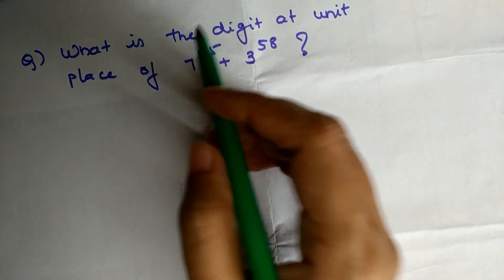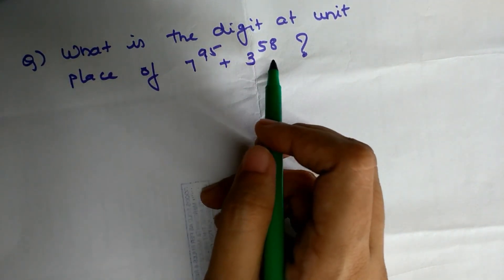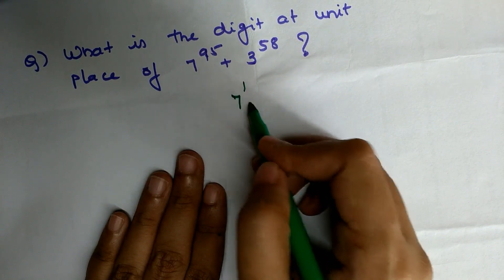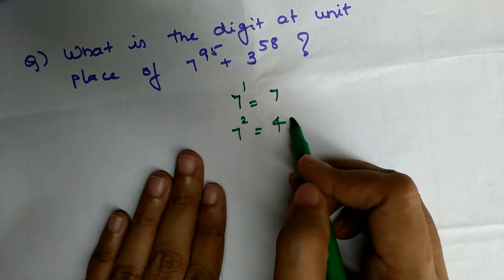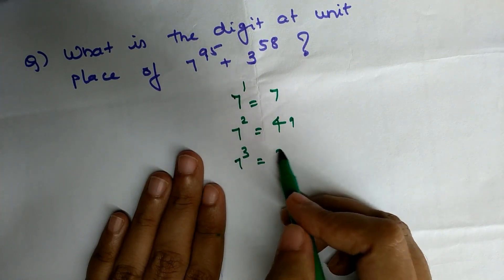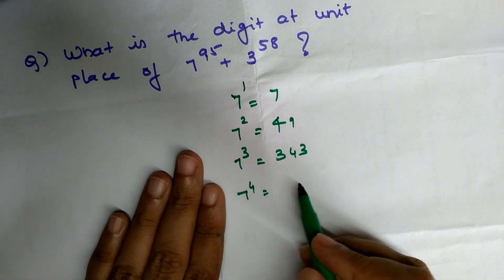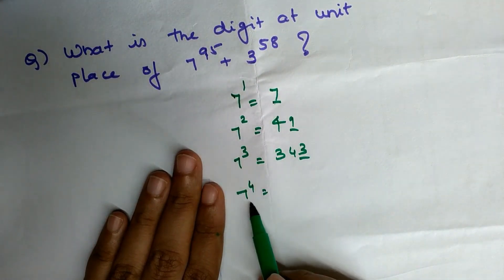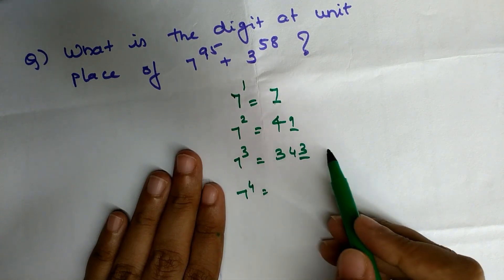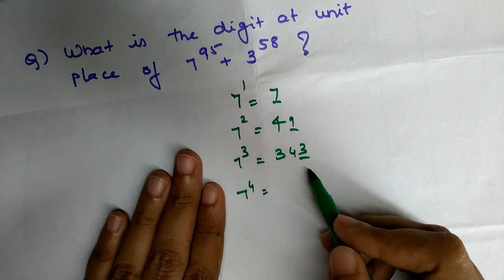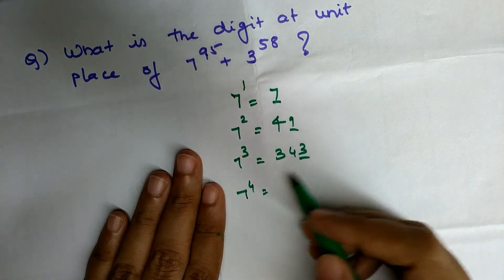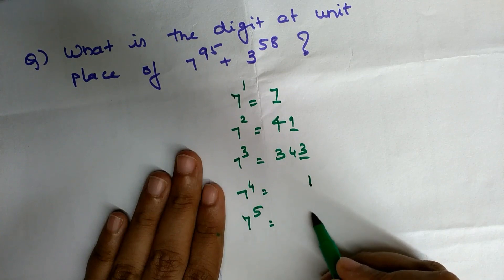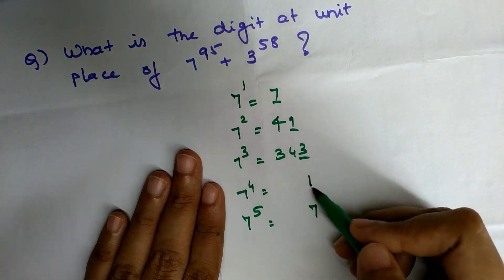What is the digit at the units place of 7^95 + 3^58? Before beginning, let's look at the powers of seven. 7^1 = 7, 7^2 = 49, 7^3 = 343. For 7^4, you only need to track the units place: 3 × 7 = 21, so the units digit is 1. For 7^5, 1 × 7 = 7 — so the units place repeats with a cycle of four.